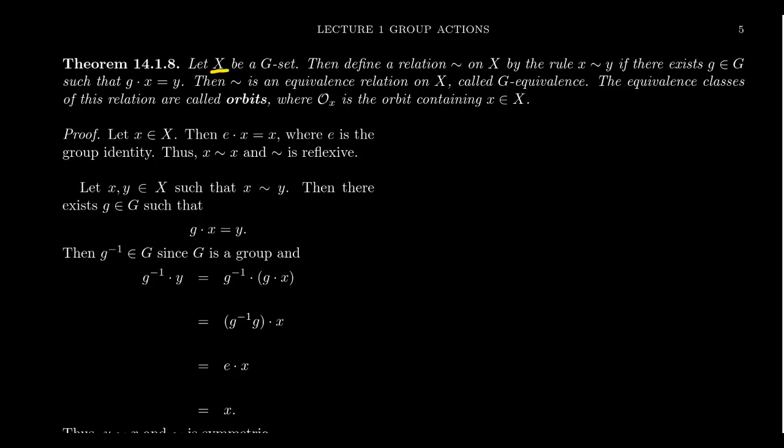So imagine that X is some G-set, where G of course is a group. We define a relation on X where we say two elements X and Y are related to each other if there exists some element g in the group such that g acts upon X and gives you Y. So if Y is the image of X with respect to some element acting upon it, then we say X is related to Y. We claim that this relation is in fact an equivalence relation, called G-equivalence on X.